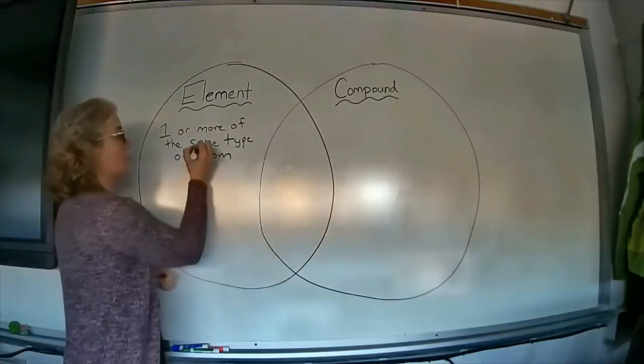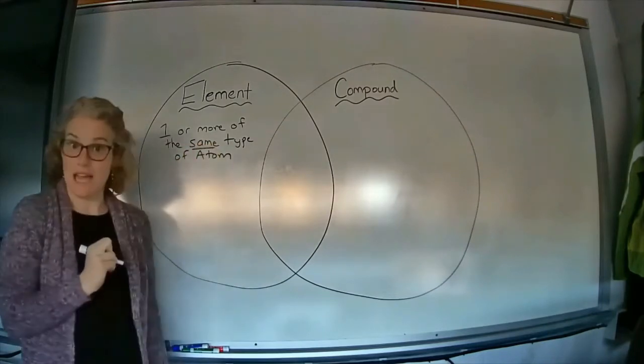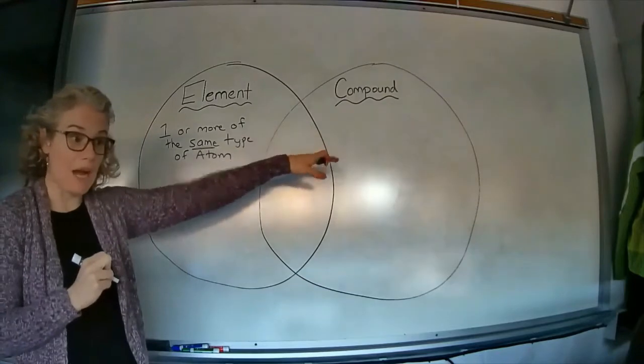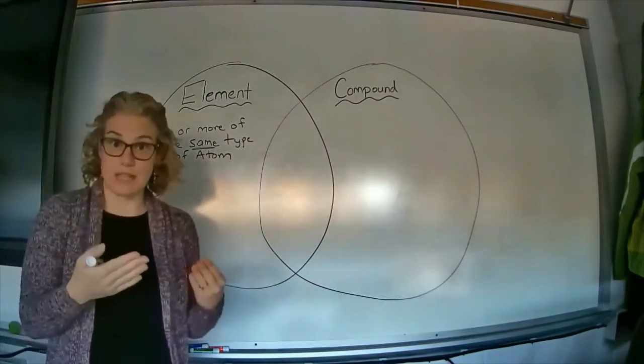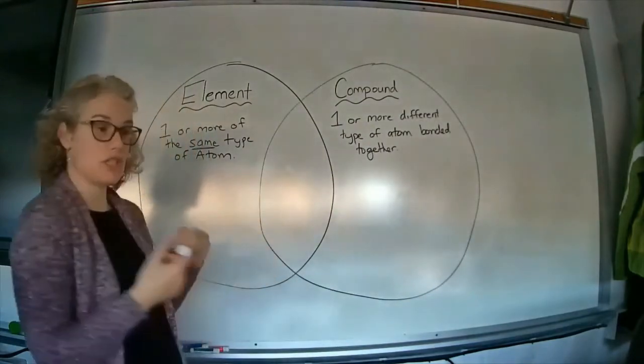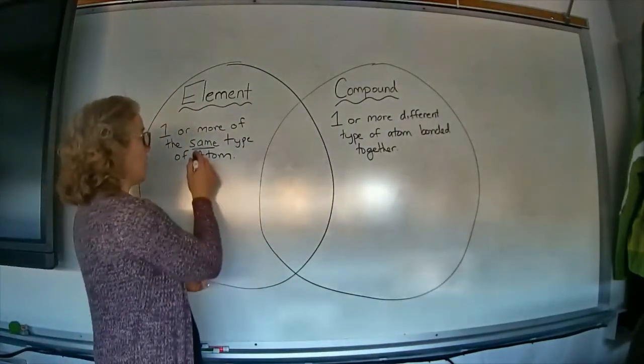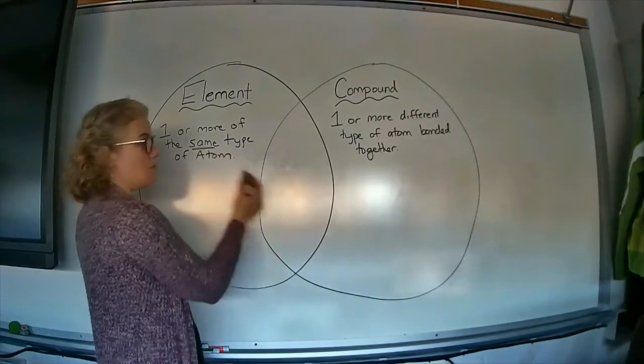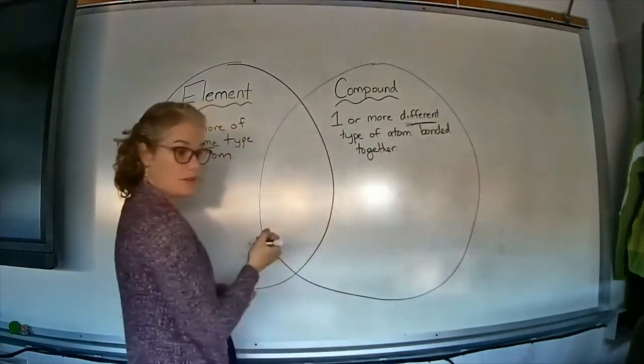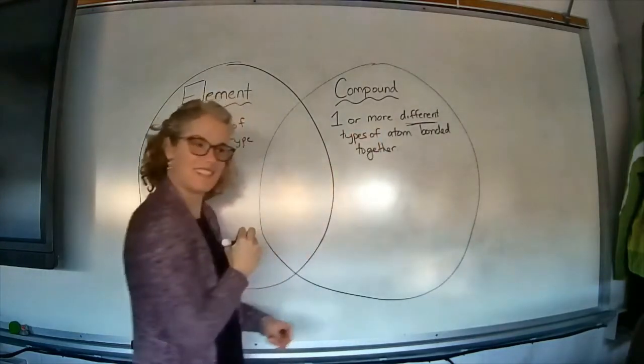An element is one or more of the same type of atom, where a compound is one or more different types of atoms bonded together. When you look at these two definitions, key words to pick out are same type of atom versus different types of atoms.